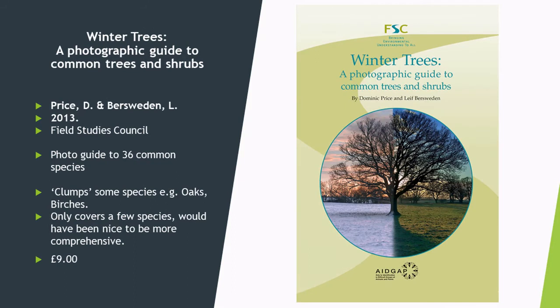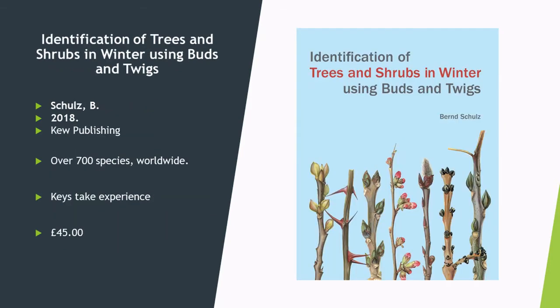Winter Trees: A Photographic Guide to Common Trees and Shrubs was written by Price and Persueden in 2013. It's an excellent photographic reference to 36 common species. It does clump some species together — things like oaks and birches — but it's a good comprehensive guide nonetheless and a useful one to have in your arsenal.